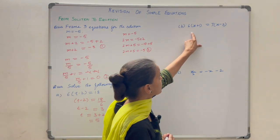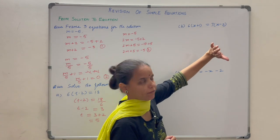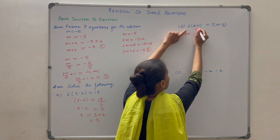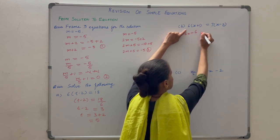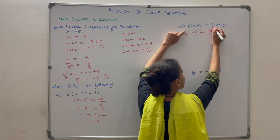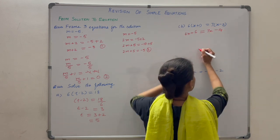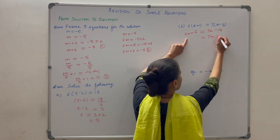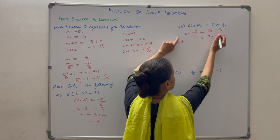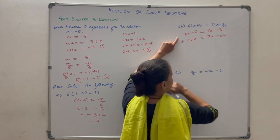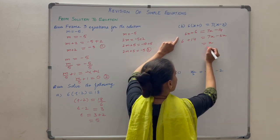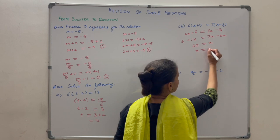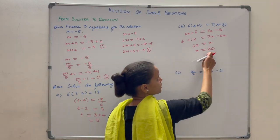Now solve 6(x plus 1) equals 7(x minus 2). There is no common factor between 6 and 7, so apply the distributive property: 6x plus 6 equals 7x minus 14. Taking 6x to the right hand side it becomes minus 6x, and minus 14 to the left becomes plus 14... so 7x minus 6x equals 14 plus 6, giving x equals 20.